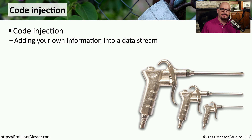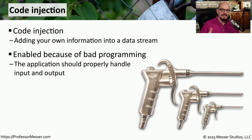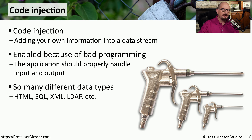A code injection attack is a very common application attack where the attacker will put their own code into information that is input into the application. This is an attack that should not be allowed, but application developers have to put checks into their code to prevent any unnecessary or unwanted data being injected during normal input. There are many different kinds of code injections: HTML code injections, SQL injections, XML injections, and others.